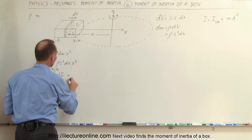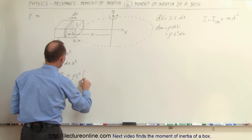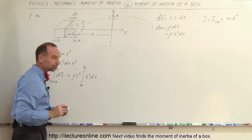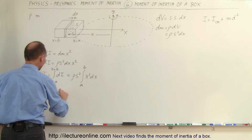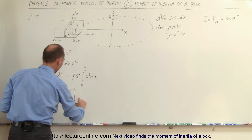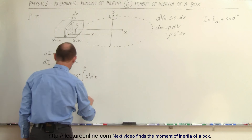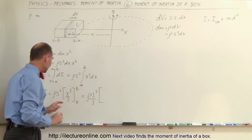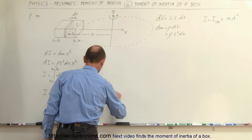Taking out the constants — the density and s squared — we integrate x squared dx from x equals a to x equals b. That's a relatively easy integral. So I is equal to the density times s squared times x cubed divided by 3, evaluated from a to b. Plugging in the upper and lower limits and subtracting, this gives us the density times s squared times, with the 3 in the denominator, b cubed minus a cubed.